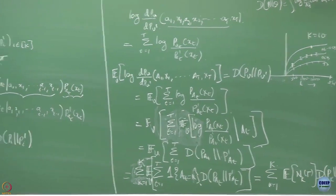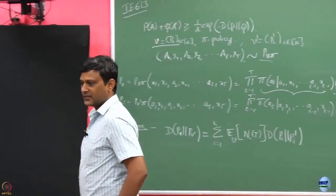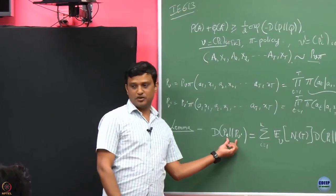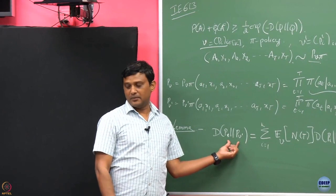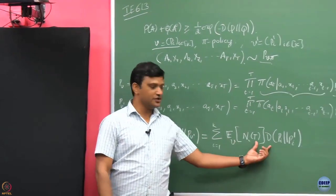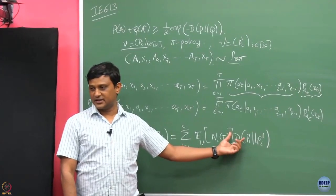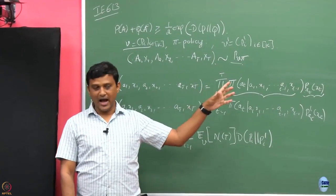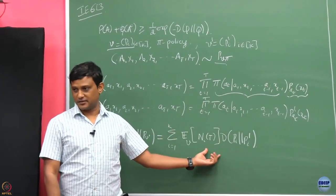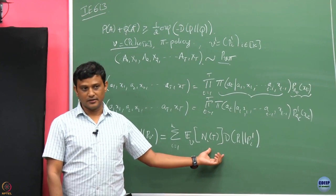Bringing the KL term outside, we get that the total KL divergence between ν^π and ν'^π equals the sum from k=1 to K of E_ν[N_k(T)] times KL(P_k || P_k'). This is our lemma: the divergence between the induced distributions in two environments under the same policy decomposes into the expected number of arm pulls weighted by the per-arm KL divergences.